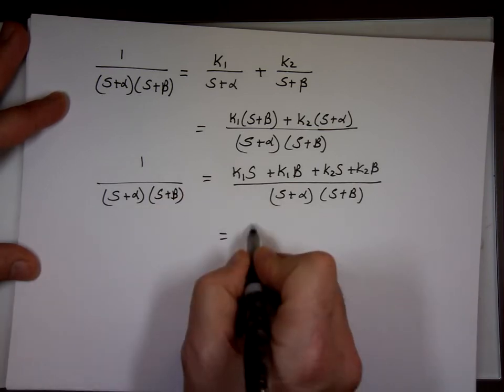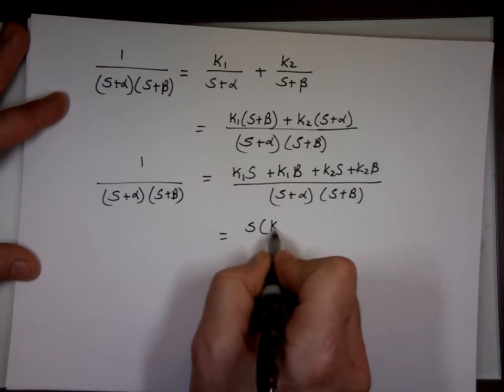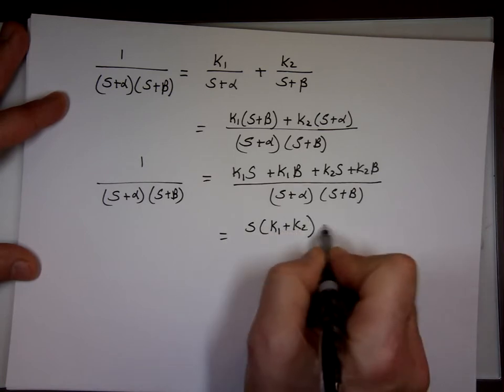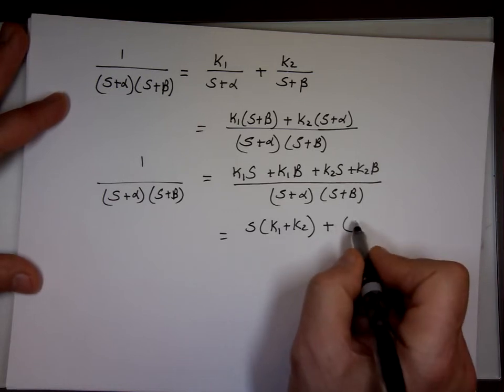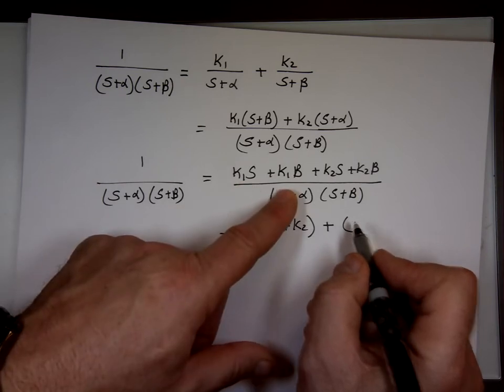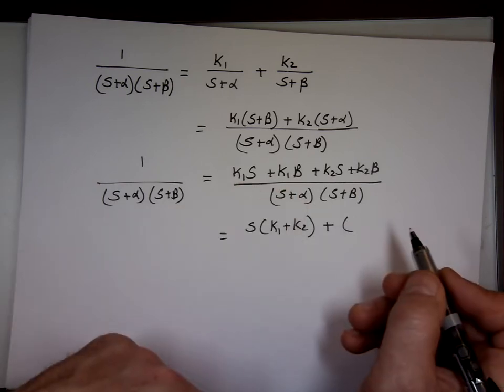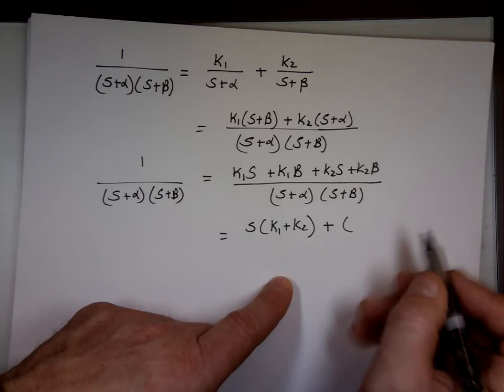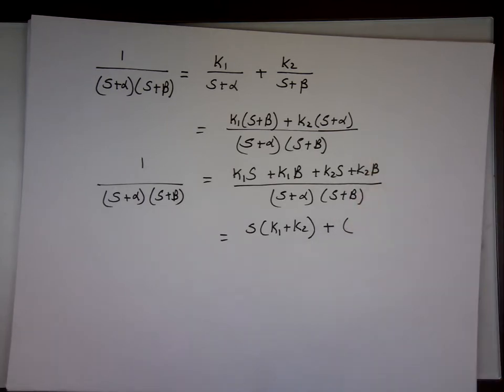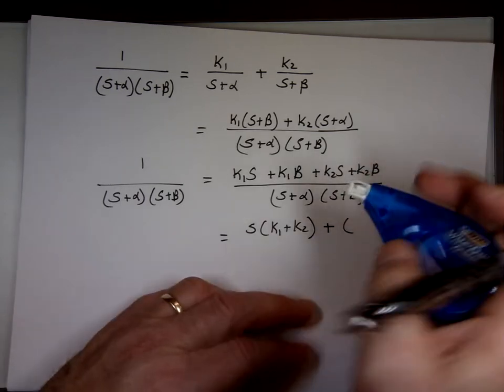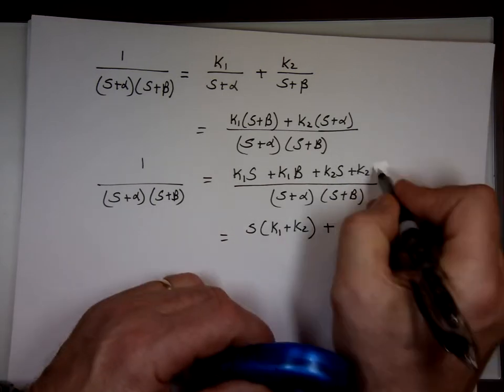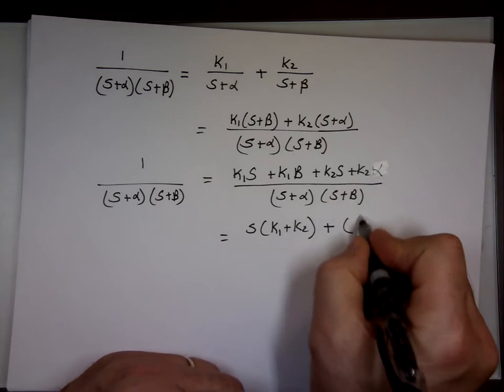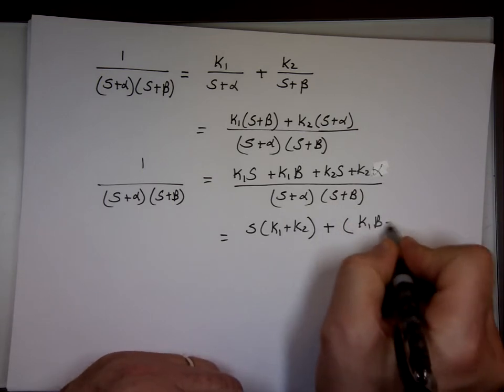So if you multiply that, K1S + K1β, plus K2S + K2α. The right side, you can factor S out. You have K1+K2. And the constant is going to be what? One of them is α. That's an α.